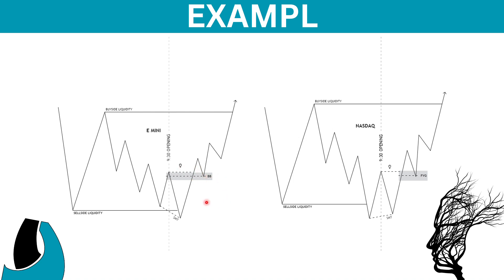We can enter from the breaker block, either we can enter from the fair value gap, or either from the inversion fair value gap — we have multiple ways of entries. So if this happens at 9:30 open with SMT divergence and a structure shift, we should be aiming for buy-side liquidity, because sell-side has been taken out. We should have the criteria of hitting any high time frame PD array.